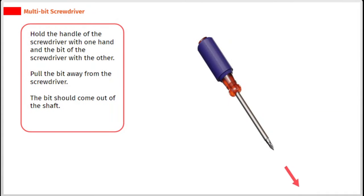Hold the handle of the screwdriver with one hand and the bit of the screwdriver with the other. Pull the bit away from the screwdriver. The bit should come out of the shaft.